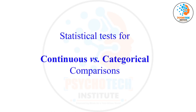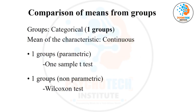Continuous versus categorical: one variable is quantitative and another is qualitative, like hemoglobin label and gender. What is the average hemoglobin label in males, what is the average hemoglobin label in females — just compare whether it is high or low.